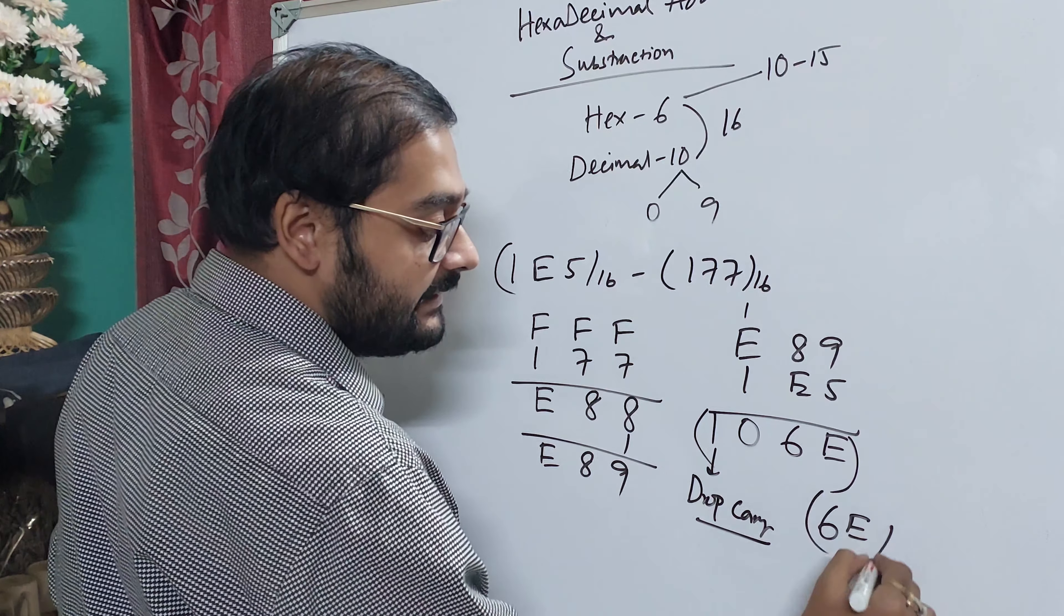Carry 1, total as I write. This is hexadecimal addition. What is the difference between hexadecimal subtraction?